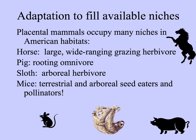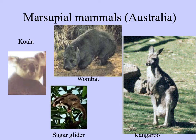Here's another example. In American habitats, we have placental mammals filling various roles: a large grazing herbivore is a horse; a rooting omnivore, a pig; an arboreal herbivore would be the slow-moving sloth; and little terrestrial seed eaters and pollinators can be mice. Here are some marsupial mammals in Australia — think about which of these is convergent with the horse, the pig, the sloth, and the mouse.